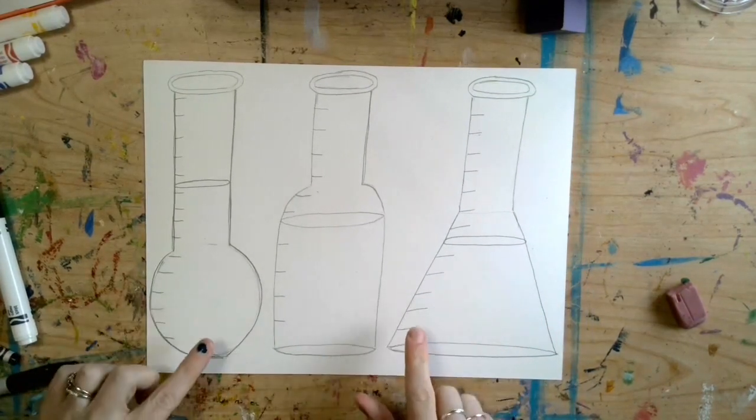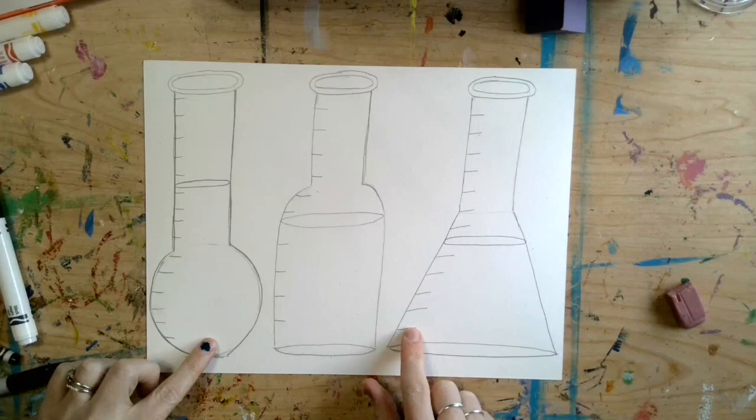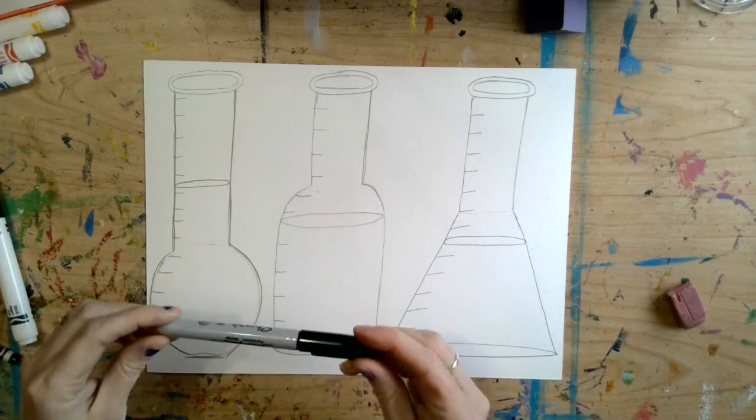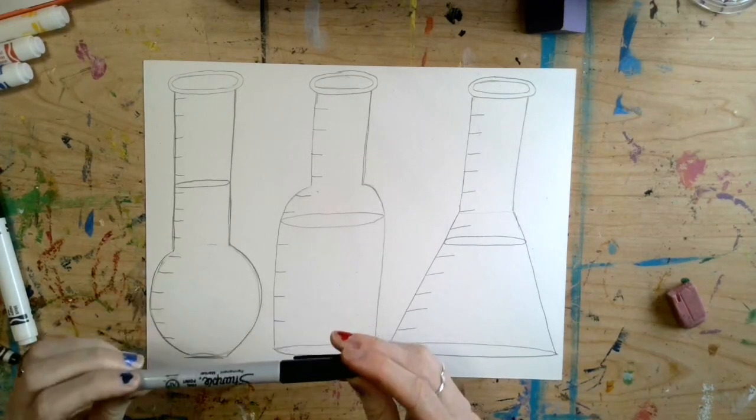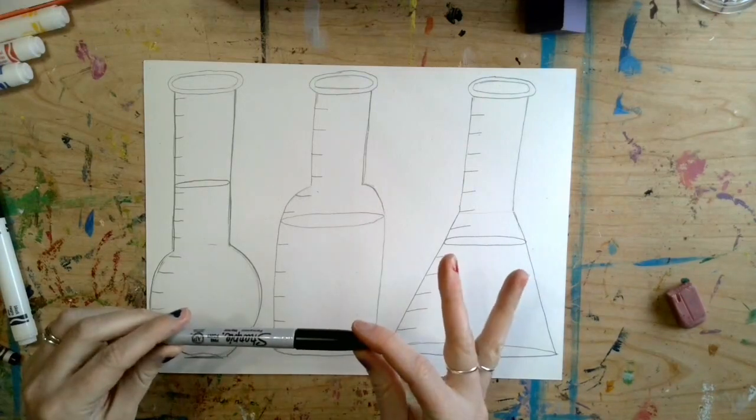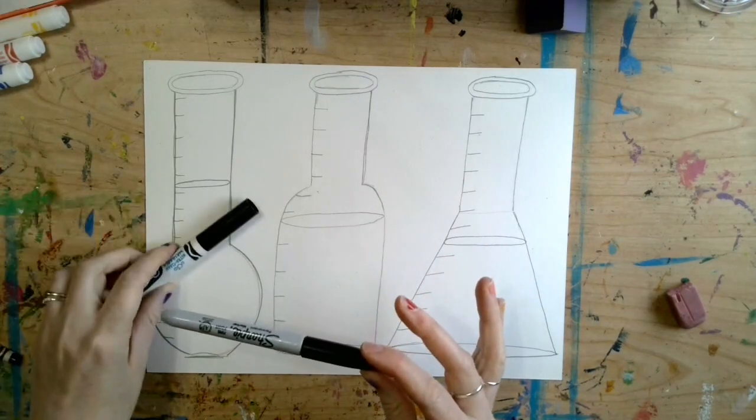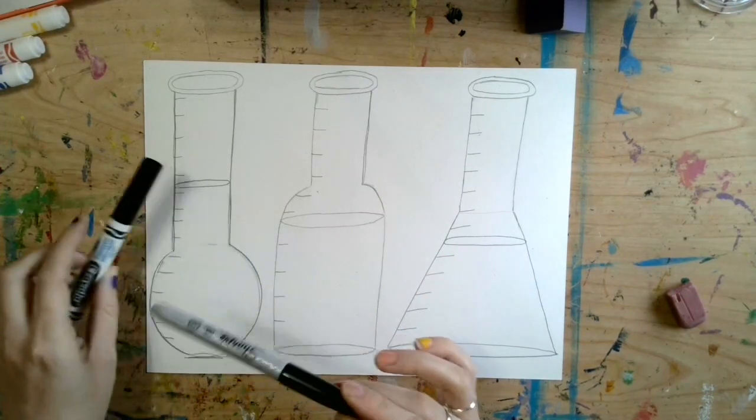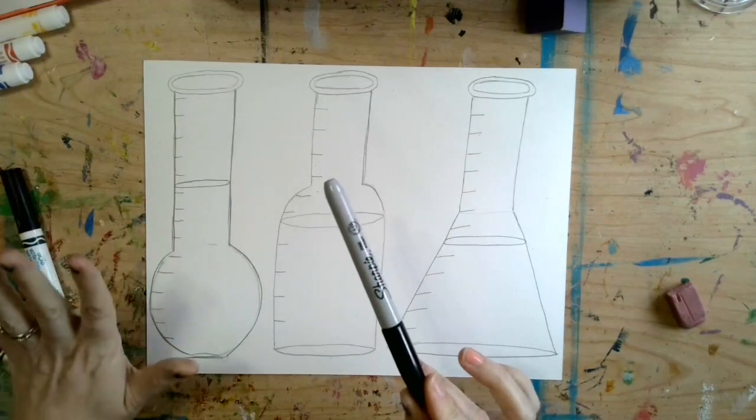The next step is I'm going to be outlining this with a sharpie. If you do not have a sharpie at home, don't outline yet. You can wait until the end because otherwise if you use just a regular black marker you might have a problem later. So if you don't have a sharpie I would wait, but I'm going to quickly outline.